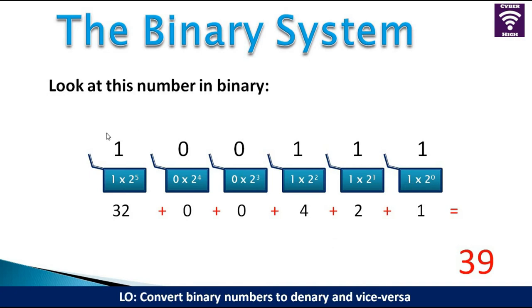So this binary number, which we have been given, when you convert it into the decimal system, or the denary, it gives us 39.